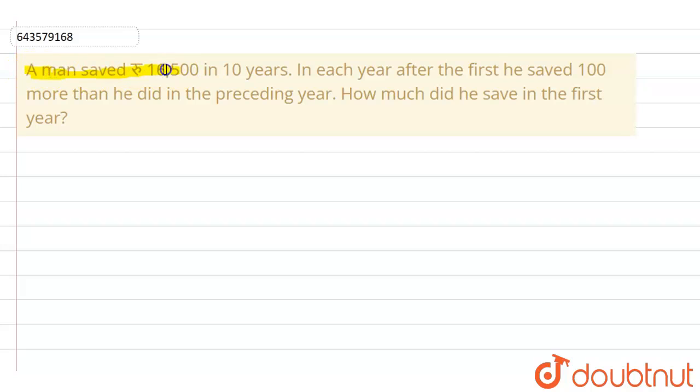A man saved ₹16,500 in 10 years. In each year after the first, he saved ₹100 more than he did in the preceding year. How much did he save in the first year?